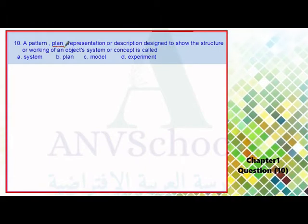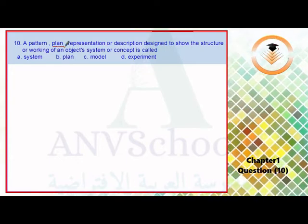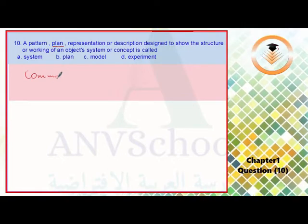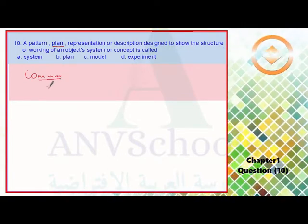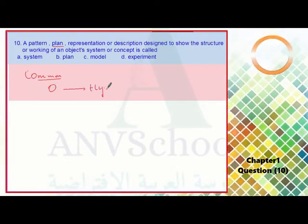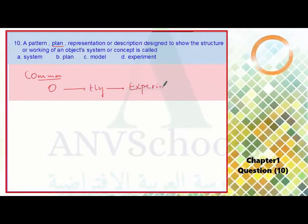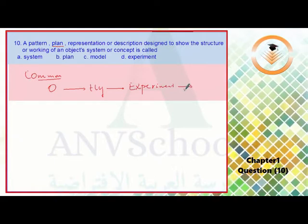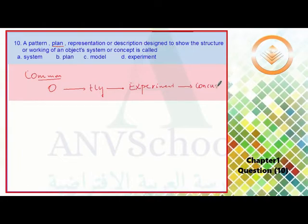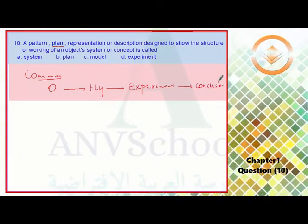As I told you, as you know, all scientists have common steps. The first one is observation, the second one is formulating a hypothesis, the next step is making an experiment, and the last step, based on the experiment, they will arrive at a conclusion or they will arrive at a law that can be accepted by all scientists.